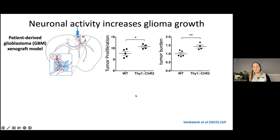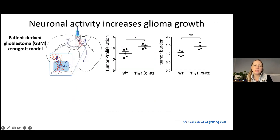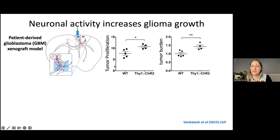To test whether neuronal activity similarly increases the growth of glioma cells as it does the proliferation of normal glial precursors, we used that same optogenetic stimulation paradigm — stimulating cortical projection neurons in the premotor cortex — but this time in the context of a diffusely infiltrating cortical glioblastoma isolated from an adolescent patient. What we found is that when we stimulated neuronal activity, just like their normal counterparts, the glioma cells increased their rate of proliferation. Over time, this increased the tumor burden specifically within the stimulated circuit. Brain activity can promote brain cancer growth.